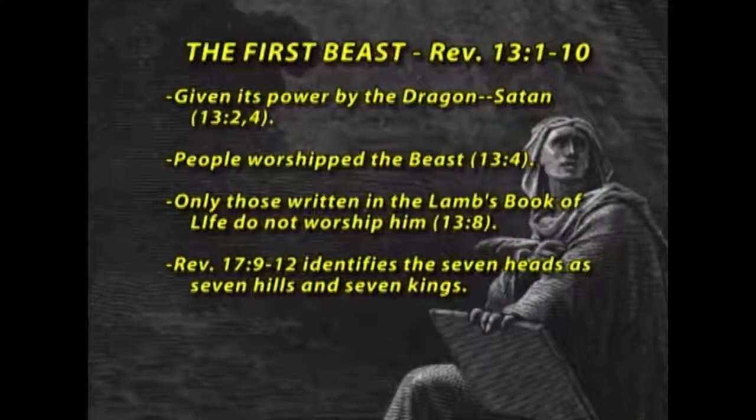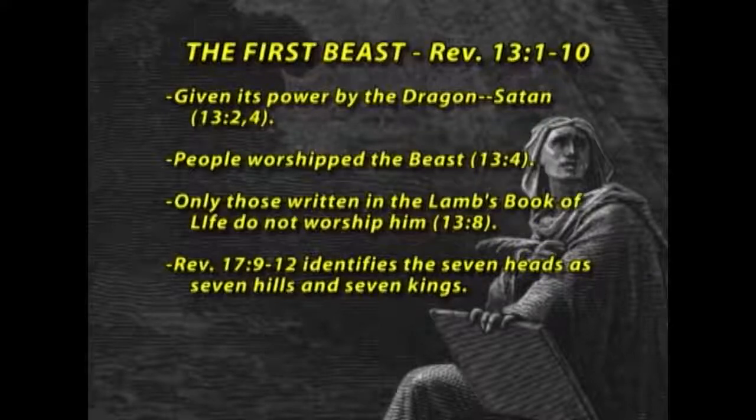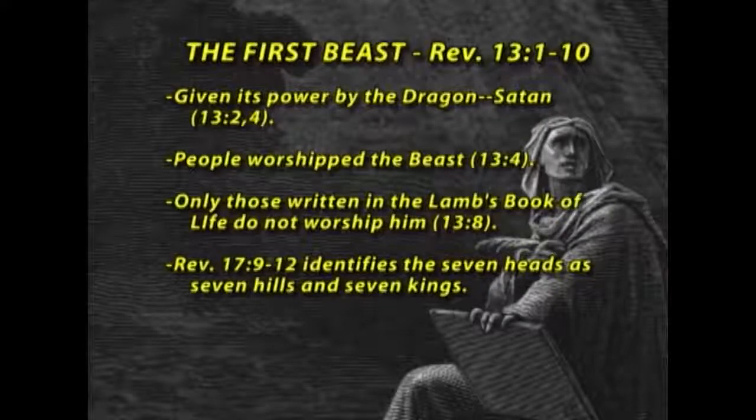In Revelation 17, verses 9 through 12, the seven heads of this beast are identified as seven hills and seven kings. What would first-century Christians naturally think of? Rome is known as the city with seven hills, and the Roman government had seven major Caesars, seven major kings. So what is this sea beast? It is none other than Rome and her rulers. This is not some figure to come 2,000 years down the road — this is something first-century Christians would have understood.